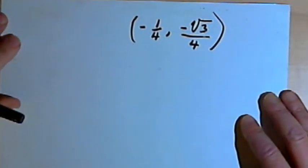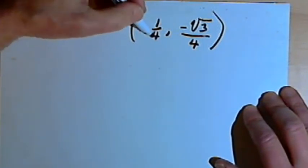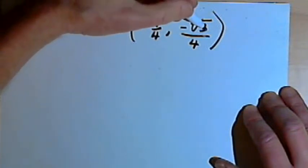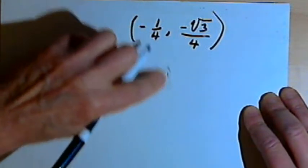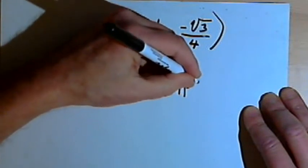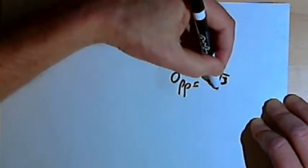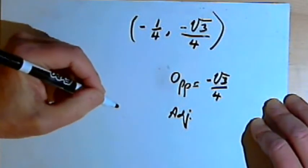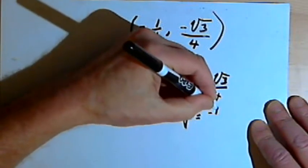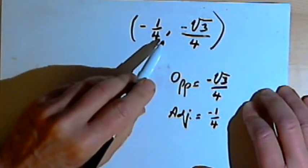Let's do one more. This one has some fractions and square roots in it. We have the point negative 1 over 4, comma negative square root of 3 over 4. The opposite side is going to have a length equal to the y-value, so that's negative square root of 3 over 4. The adjacent side is going to be negative 1 over 4. That would put this terminal point in the third quadrant.